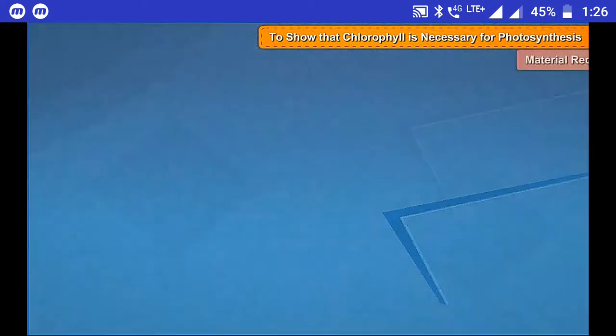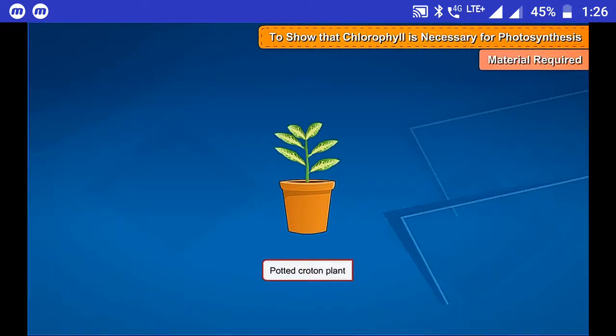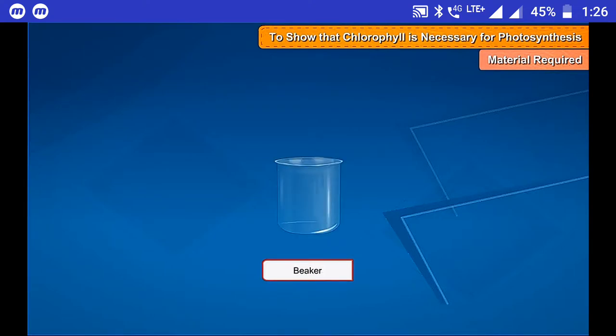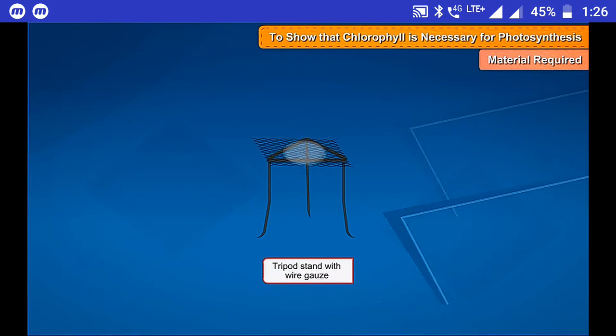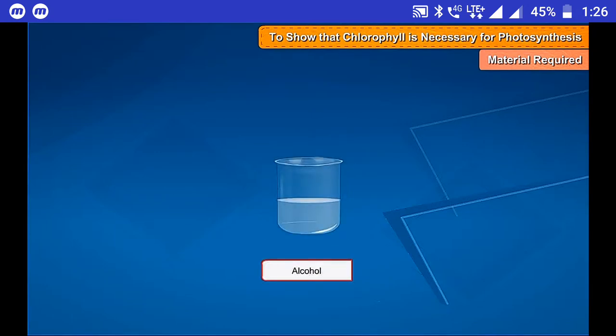Materials required: Potted croton plant, iodine solution, beaker, test tube, Bunsen burner, tripod stand with wire gauze, alcohol, and water.